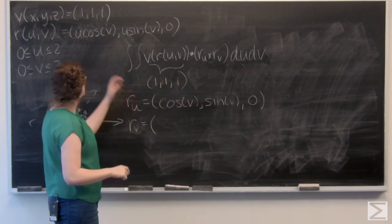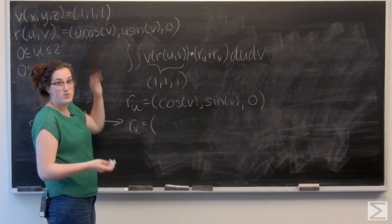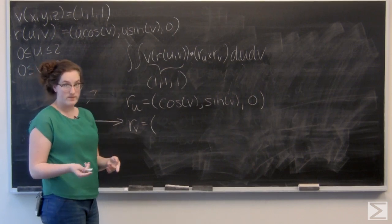Now let's find r v. Well, the derivative of u cosine of v with respect to v is going to be negative u sine of v.